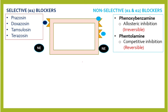Phentolamine is a competitive inhibitor — it attaches on the active site, so it is reversible. If epinephrine goes to this receptor, it will not find a place because it is blocked on alpha-1. Similarly, it is blocked on alpha-2 as well.